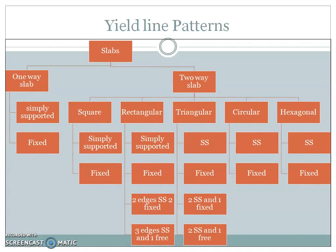In yield line analysis, we study the yielding patterns of slabs, which are already predefined based on experience. It is already studied and known that a particular slab will fail in a particular pattern. Depending on this yield line pattern, we determine the maximum moment or the failure moment for that slab.